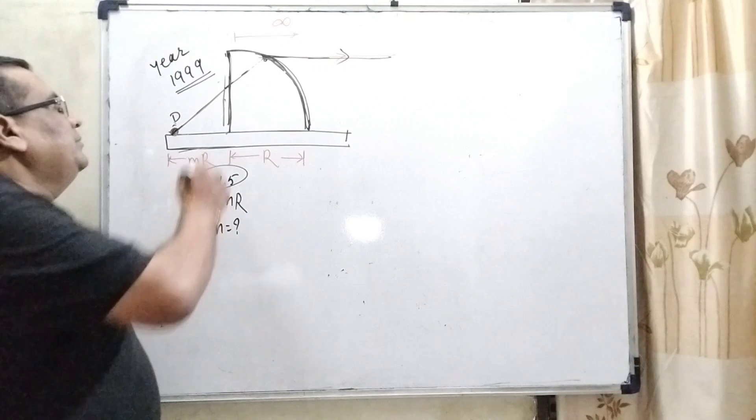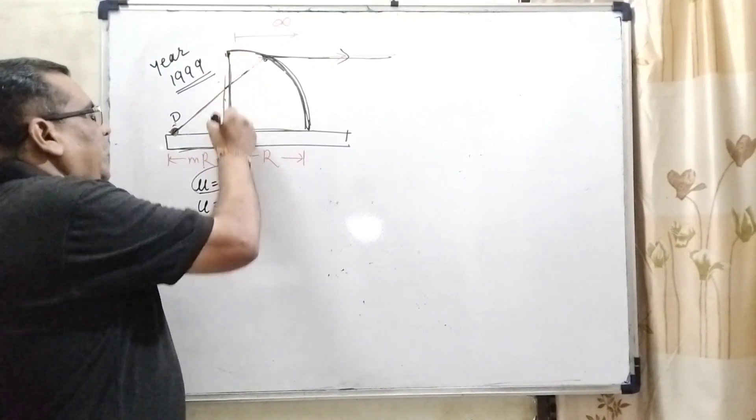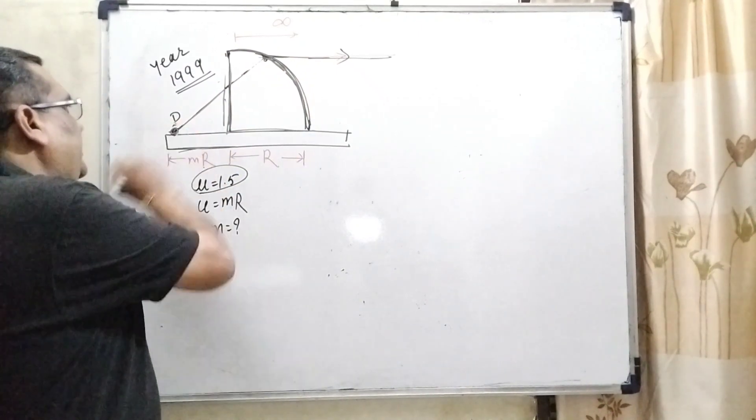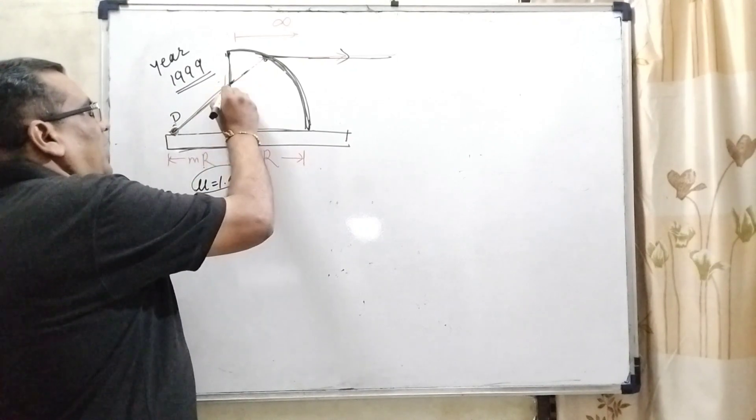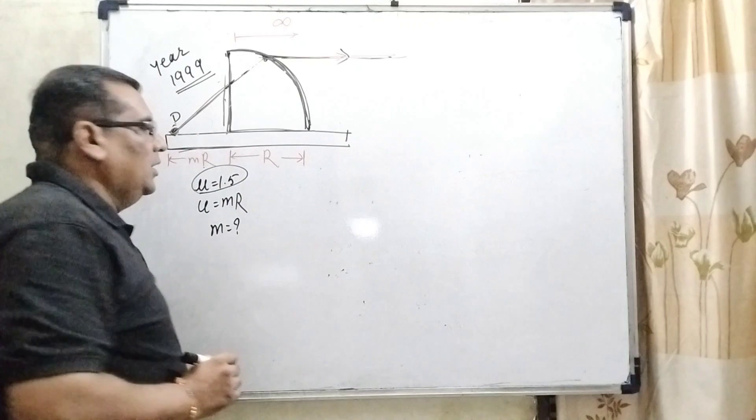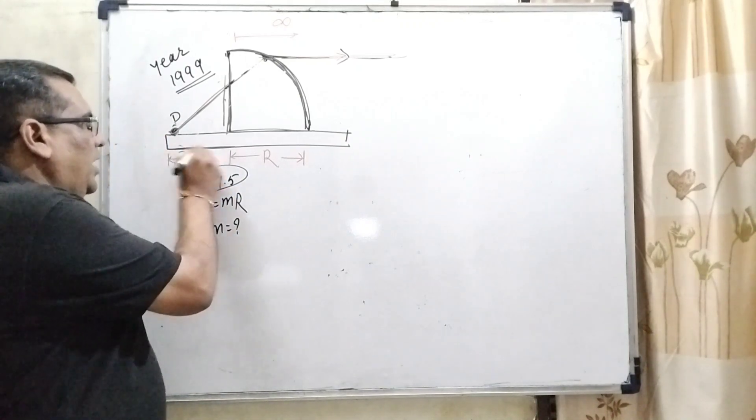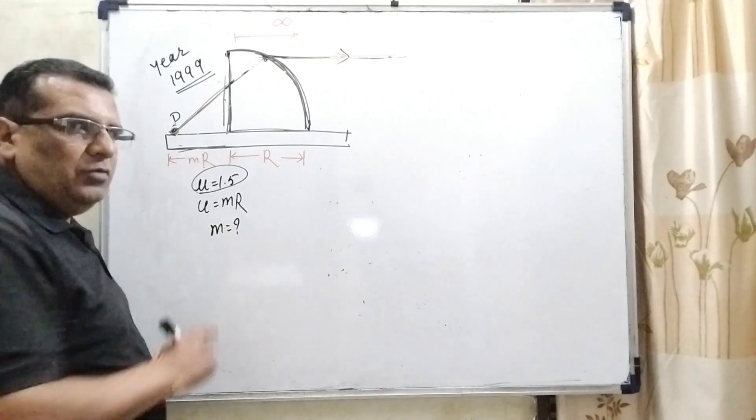In this question, we have given this quarter cylinder. This surface is a plane and here is the curved surface. An object is kept at the point P, which is incident on this face, and after refraction, it goes to the parallel. Here we have given mu equal to 1.5, u equal to mR, it is given and we have to find out small value of small m.